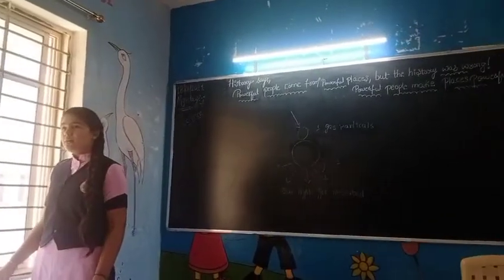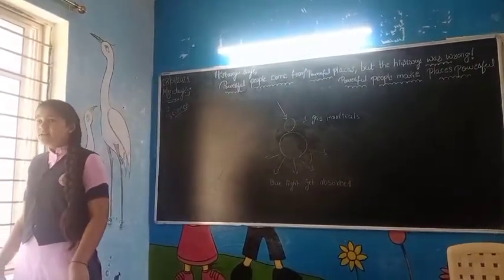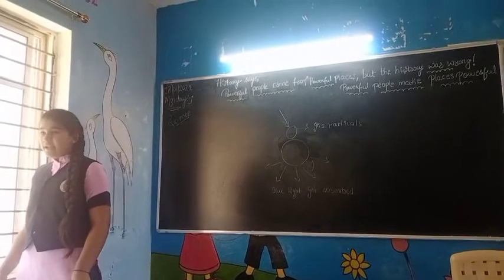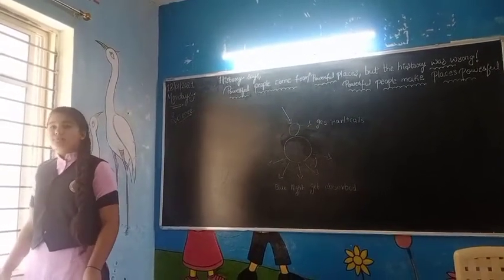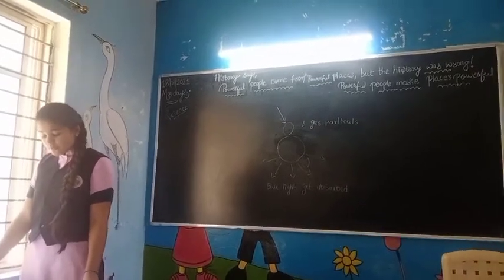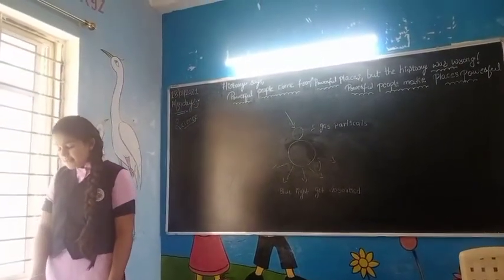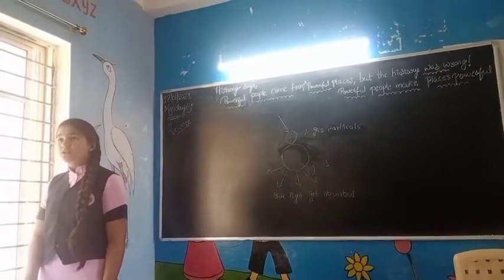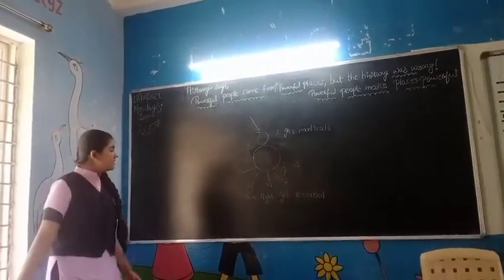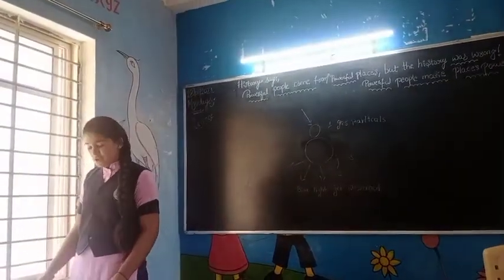The higher frequency of blue is more often absorbed than the red frequency. This is because red light has the wavelength about 1.8 times longer than the blue wavelength. After a while, the molecules radiate or give off the light where the blue light gets reflected in every direction.